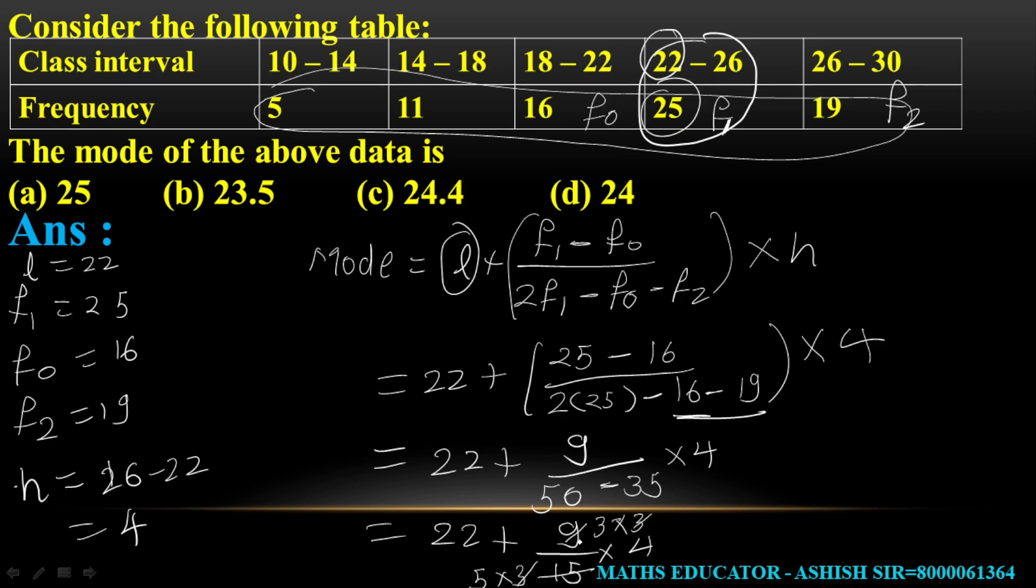Now 15 is 5 times 3, and 9 is 3 times 3. We can cancel 3, so 3 divided by 5 times 4 equals 12 divided by 5. The mode Z equals 22 plus 12 divided by 5.